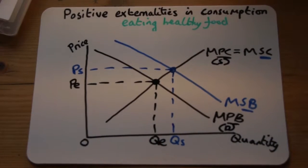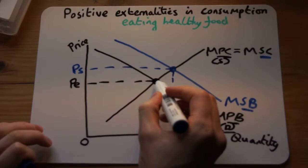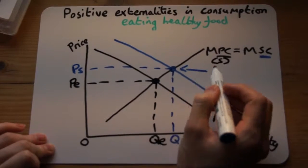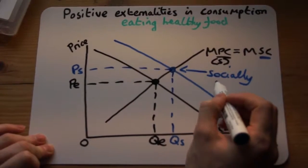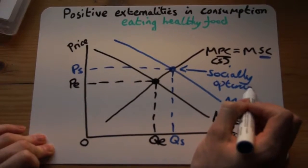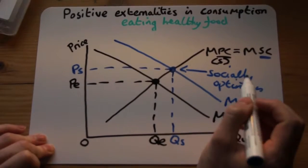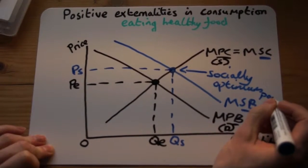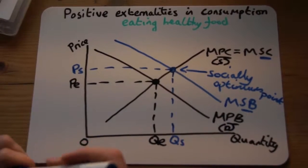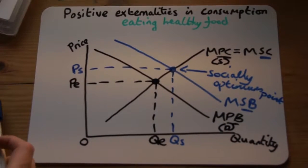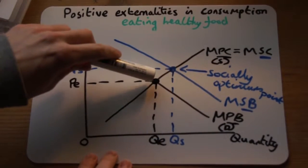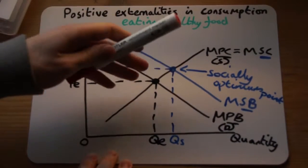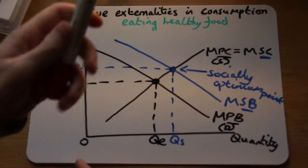So we found the free market point, and we found the socially optimum point where the social benefit equals the social cost. That's the socially optimum point — there should be a higher quantity consumed and a higher price. At the free market point, which is where we currently are, we're not at the socially optimum point, but that's where we'd like to be.